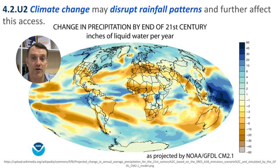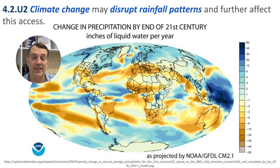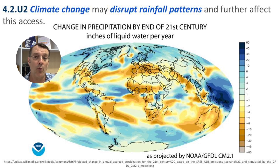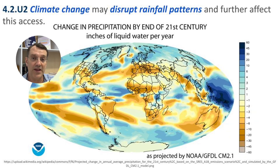Climate change can also disrupt rainfall patterns. It's not just that climate change means hotter temperatures — because it's changing the way that heat moves around the planet, those convection currents in the atmosphere will change where rain falls. So some areas as the climate warms will receive more precipitation and other areas will receive less, which may in some cases relieve limited access to fresh water, and in other places may actually exacerbate the situation for people living in those areas.